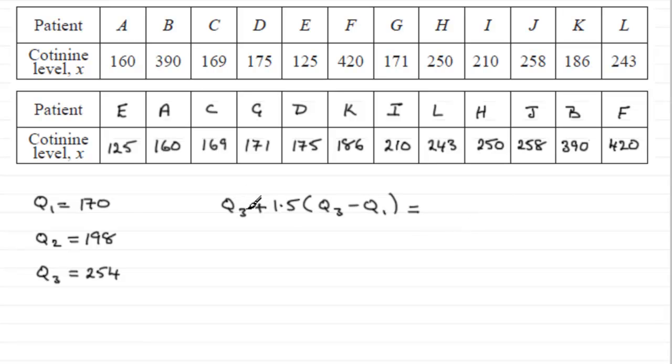And all we need to do is fill in our values that we discovered in the first part. So if we fill this in, we've got Q3 = 254 plus 1.5 times Q3 minus Q1. So that's going to be 254 minus Q1 at 170.